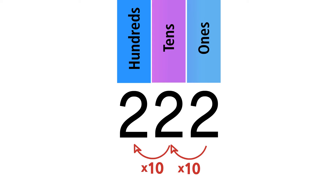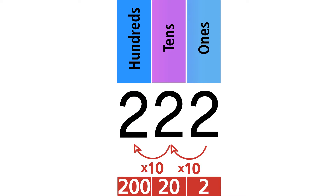A 2 in the ones place has a value of 2. A 2 in the tens place has a value of 20. 20 is 10 times more than 2. We have a 2 in the hundreds place, so the value is 200. 200 is 10 times more than 20.